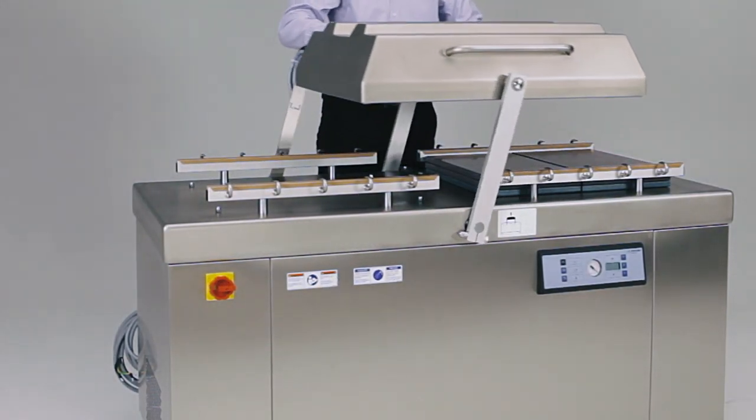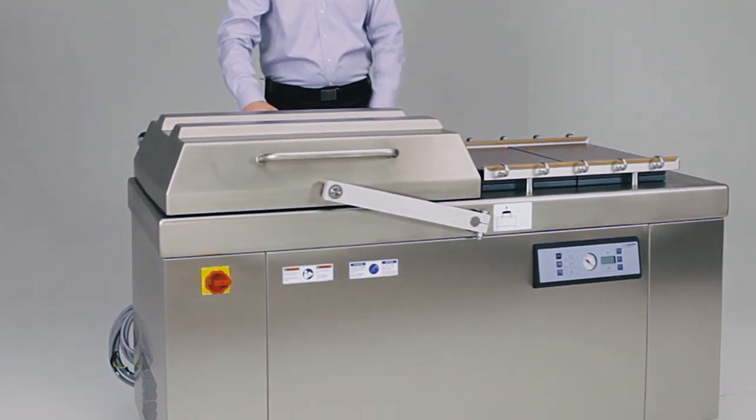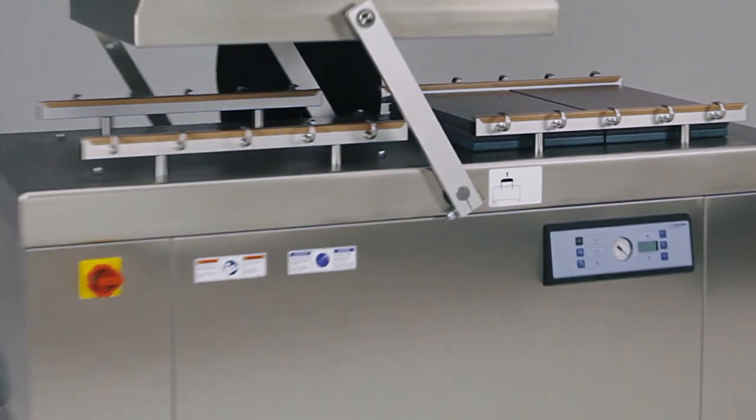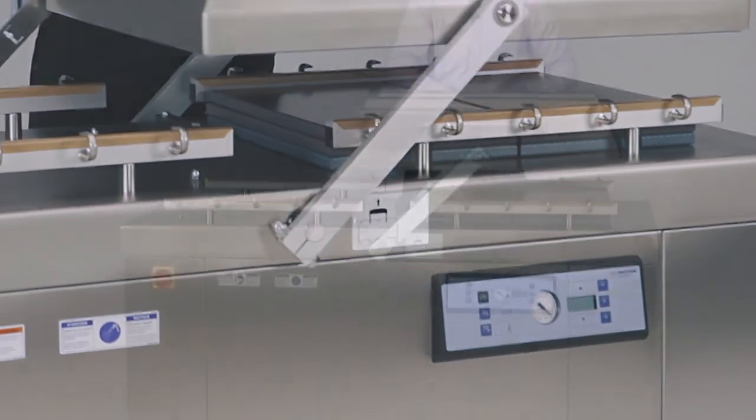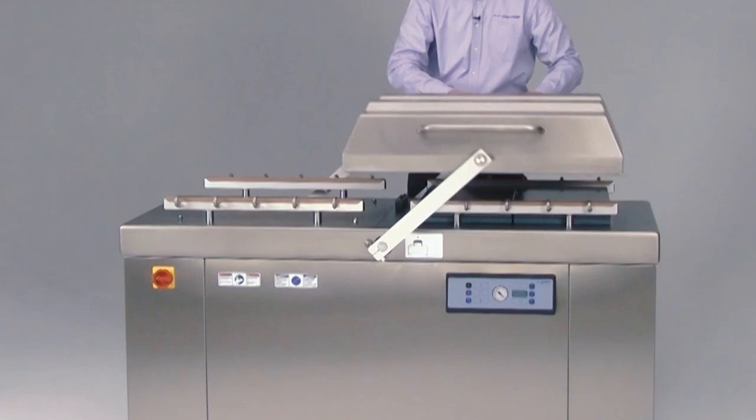You'll notice that on the swinging lid there are two arms supporting the lid for ease of access. It's very easy to swivel side to side, and with only two arms it's easy to get into your unit for maintenance and anything else you may need to do.